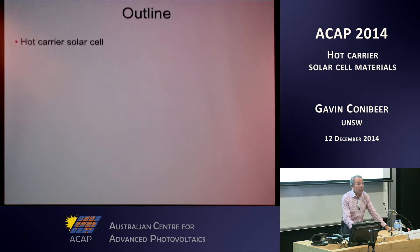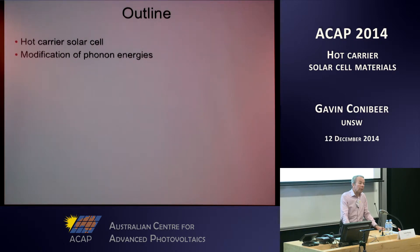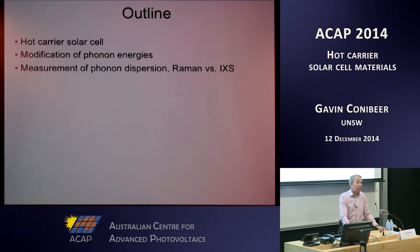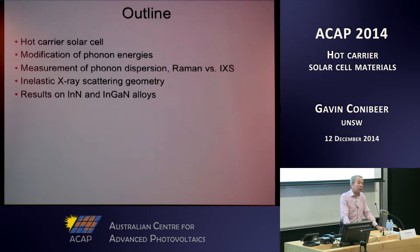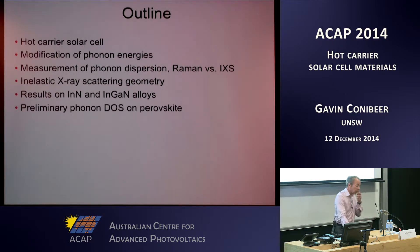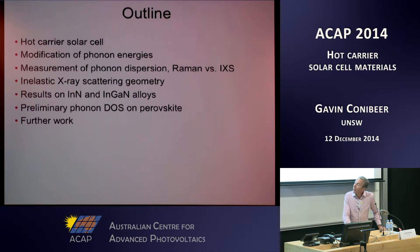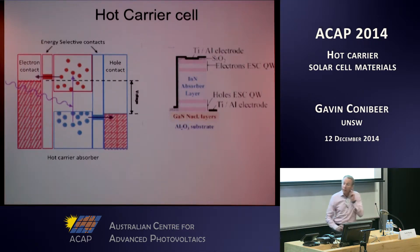The outline of my talk: first I'll talk about hot carrier cells and things we're interested in for them, then look at the modification of phonon energies and why that's important. Then look at phonon dispersions and methods of measuring them — in particular Raman and inelastic X-ray scattering — and the differences between those two. Then the geometry required for inelastic X-ray scattering, results on indium nitride and indium gallium nitride alloys, preliminary results on perovskite material, and further work. We've actually got another trip in January to do that further work.